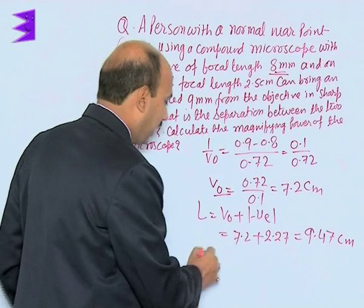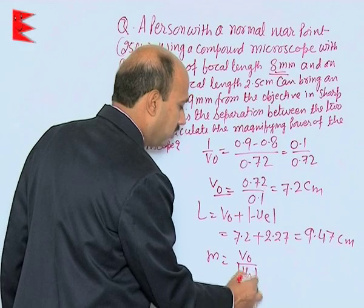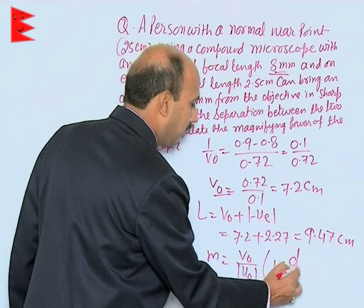We can calculate magnifying power M is equal to V naught upon magnitude of U naught into 1 plus D upon F e.